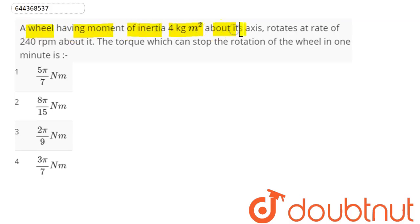The wheel having moment of inertia 4 kg meter square about its axis rotates at rate of 240 rpm. The torque which can stop the rotation of the wheel in one minute is. So we can say here torque is given as rate